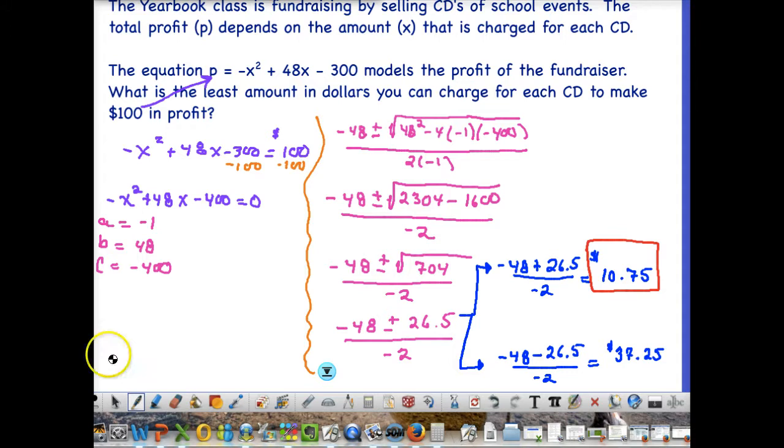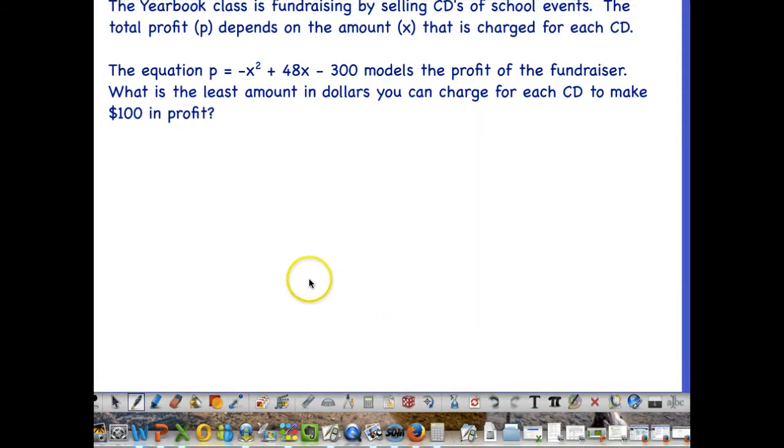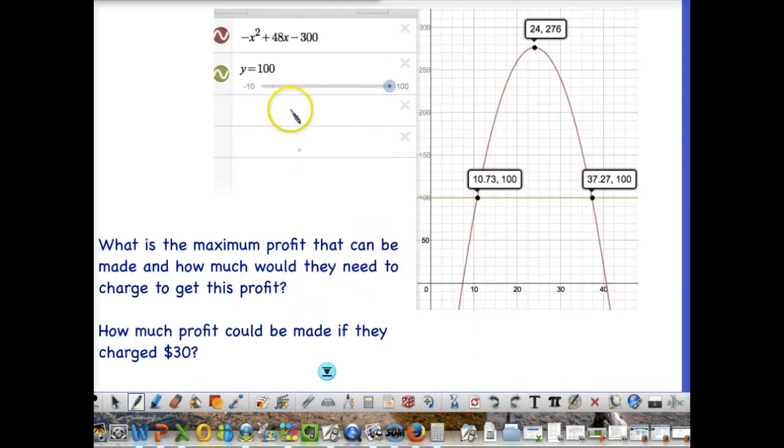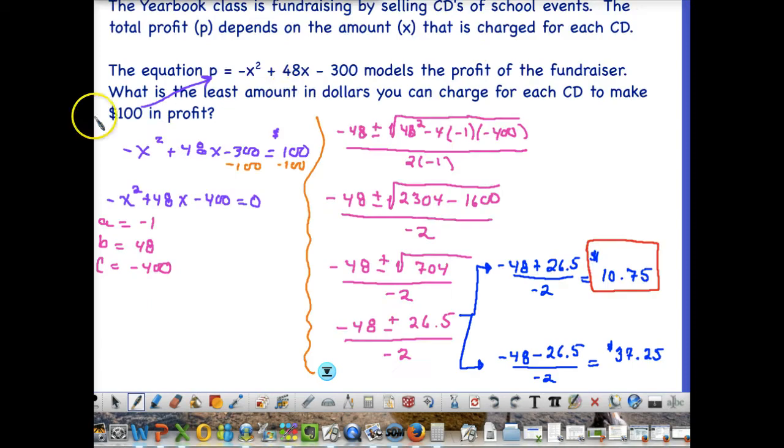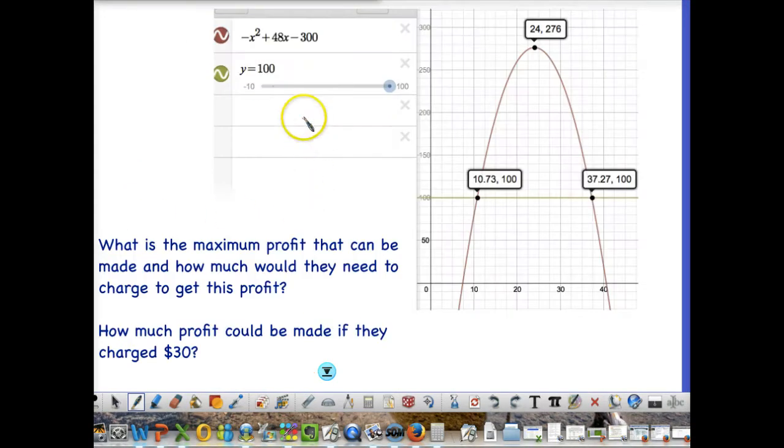Now if we go ahead and look at this graphically so that you can understand this, what we would do is we would go to our graphing calculator, and we would type in our original equation. So we have not adjusted the 300 by the 100. And if we go back and we look at our original equation, we had minus 300. When we solved it algebraically using the quadratic formula, we had to plug in the 100. So then that changed our C value to negative 400. When you solve it graphically, you don't need to do that. I just graphed the original equation here. This is our red parabola. And then the question was, we want to make $100 in profit. So I made an equation that was y equals $100. Remember that y is our profit. So I graphed that here in green.